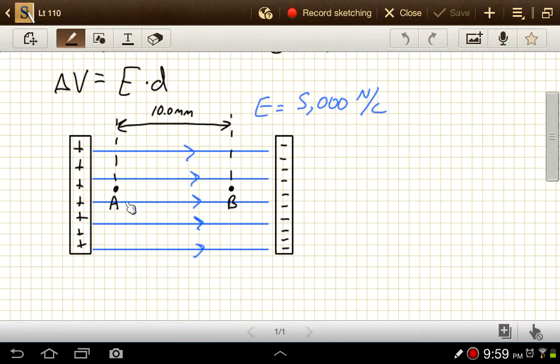So I've got two points in this uniform electric field listed out. Our potential difference then is going to be equal to the strength of the electric field, 5000 newtons per coulomb, times the distance, which is 10 millimeters.